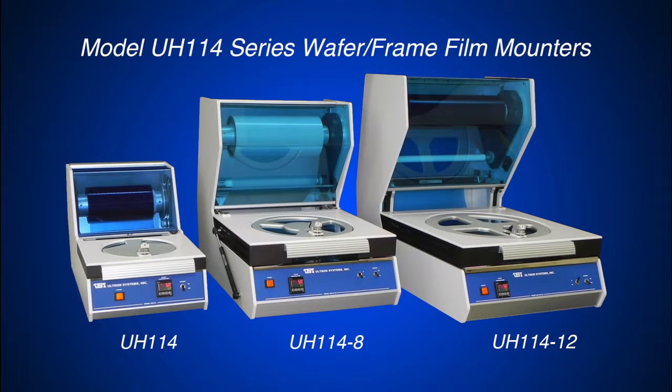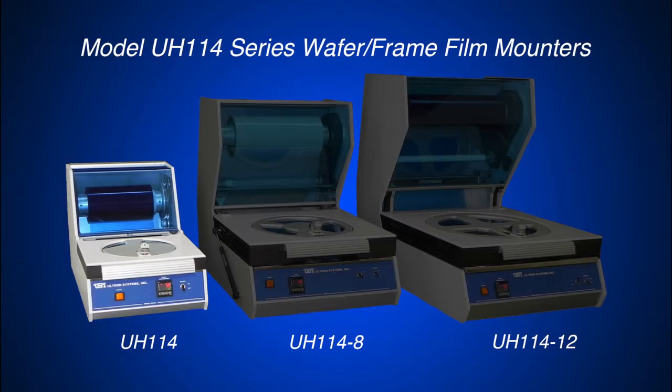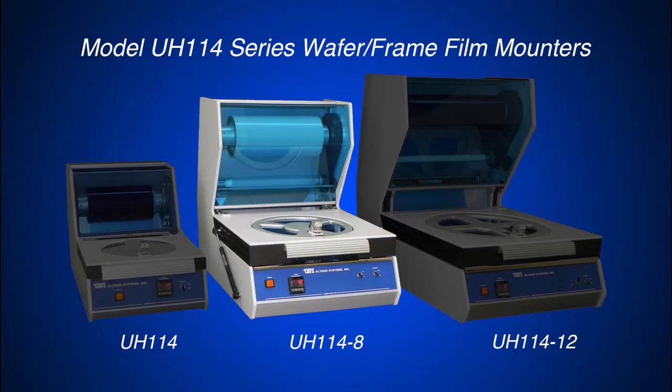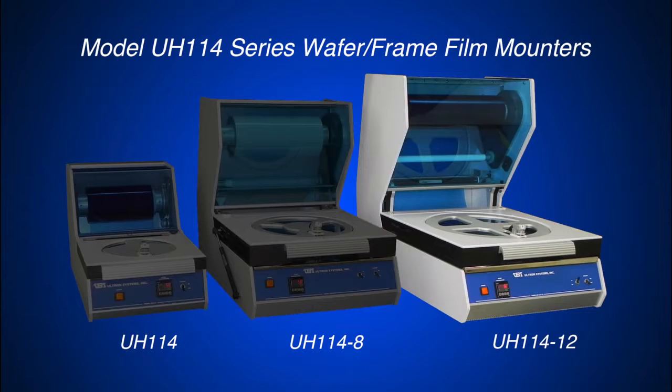Ultron Systems Model UH-114 series are precision wafer and frame film mounters that offer user control and versatility generating uniform and critical bubble-free lamination. The model is offered in three sizes to accommodate wafers up to 6 inches in diameter, up to 8 inches, and up to 12 inches in diameter.